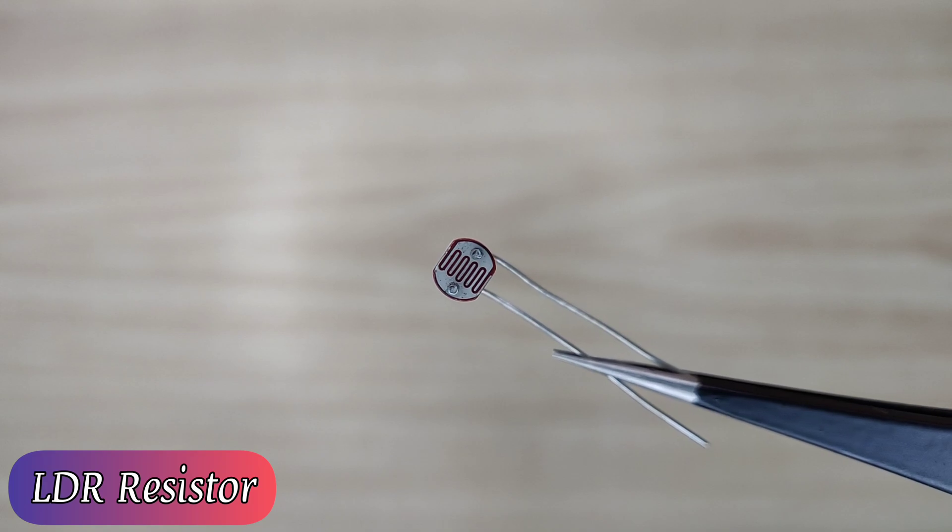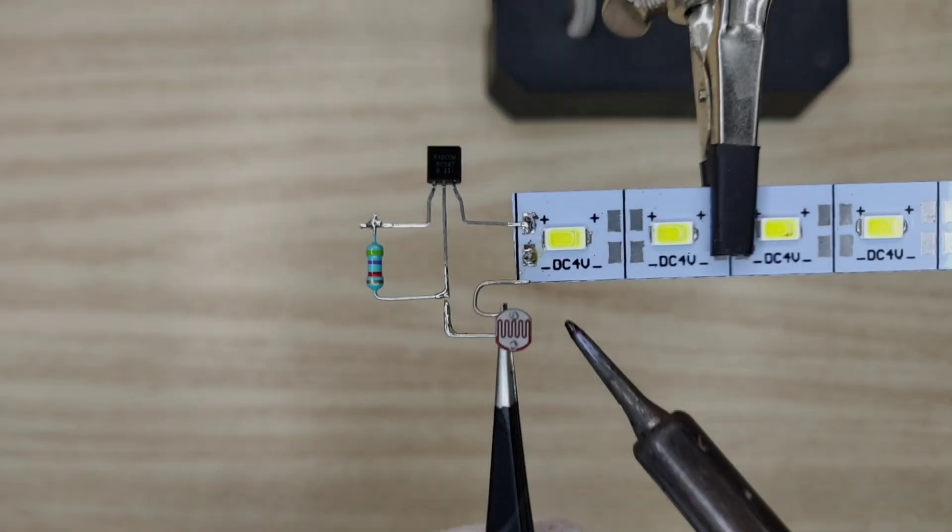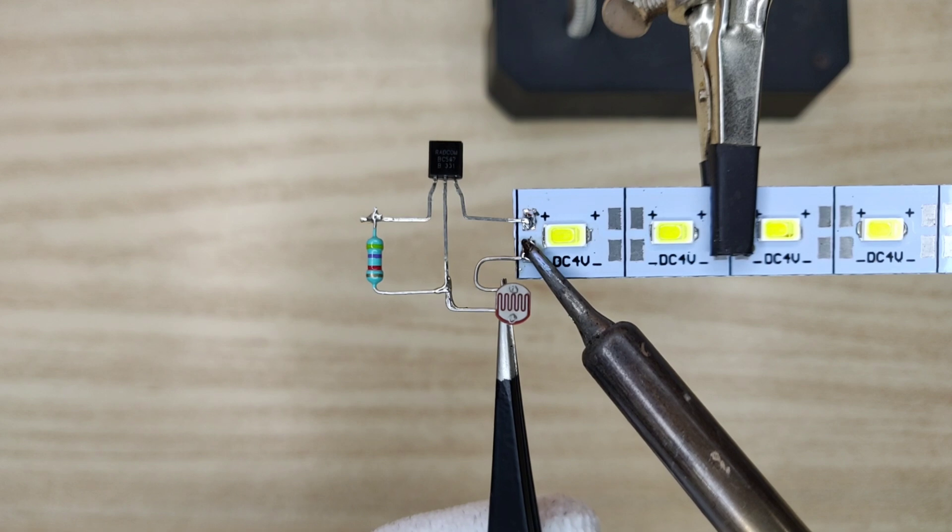Take an LDR, light dependent resistor. Solder between light negative and base of transistor.